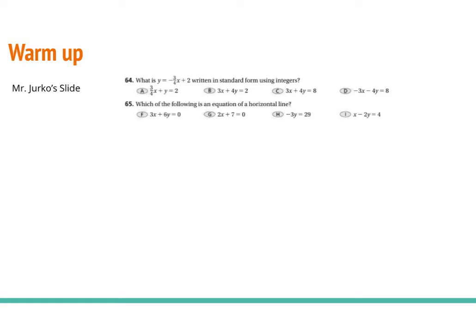Okay, number 64: what is y equals negative 3 over 4 x plus 2 written in standard form using only integers? Let's rewrite the problem down here so we have a little bit more space. y equals negative 3 over 4 x plus 2. Remember, standard form has both x and y on the left side of our equation, so the first thing we need to do is move the 3 over 4 x to the other side. Let's add 3 over 4 x to both sides so that these will cancel.